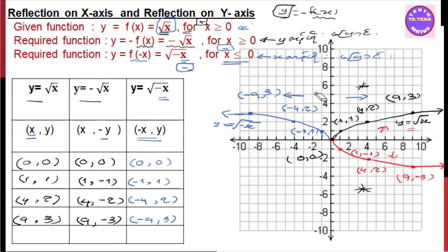Reflection on x — the graph map is y equals to minus root x. So the graph of x: y equals to y. We have to write the square root in this graph. So the graph of square root is this graph. The graph of x equals to y. We have to write the graph of x. The graph of y equals to y. This reflection will be done. I will see you later.